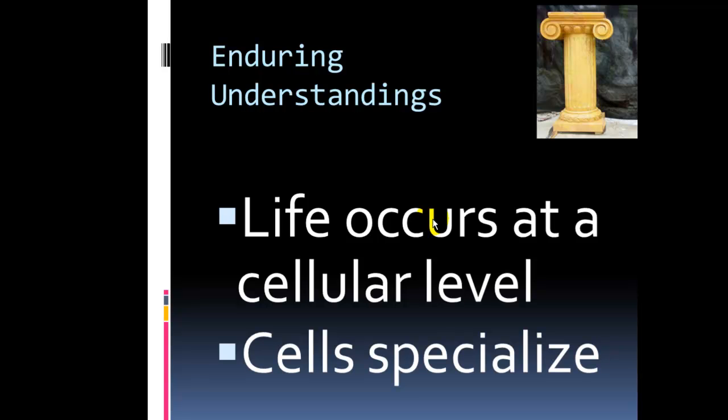So the big idea, the enduring understanding, is that our life, keeping us alive, happens at a cellular level. So we are alive because inside our cells, they do things. As well, the other big idea that we're moving towards is that cells specialize. That every cell in our body, although they have things in common, that they are unique and special in their function. And because they're special in their function, they're going to be special in their structure as well.